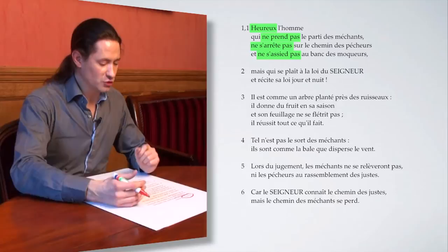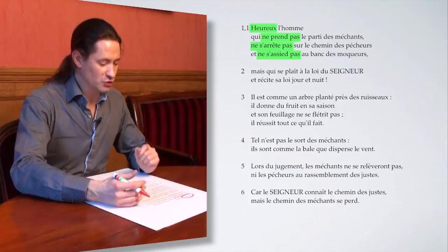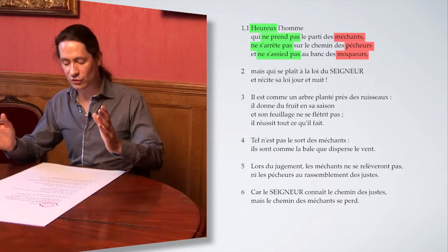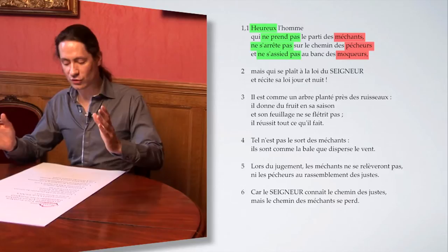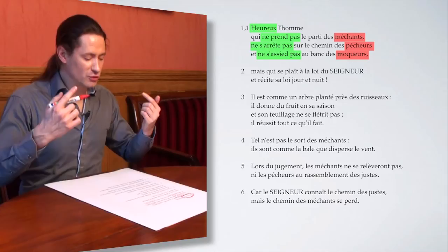Ces trois verbes sont dotés de trois compléments qui sont eux aussi parallèles entre eux : les méchants d'une part, les pécheurs d'autre part, et enfin les moqueurs. Attention, il ne s'agit pas de rejeter ces individus en eux-mêmes, mais plutôt de dénoncer leurs méfaits et de ne pas les imiter.